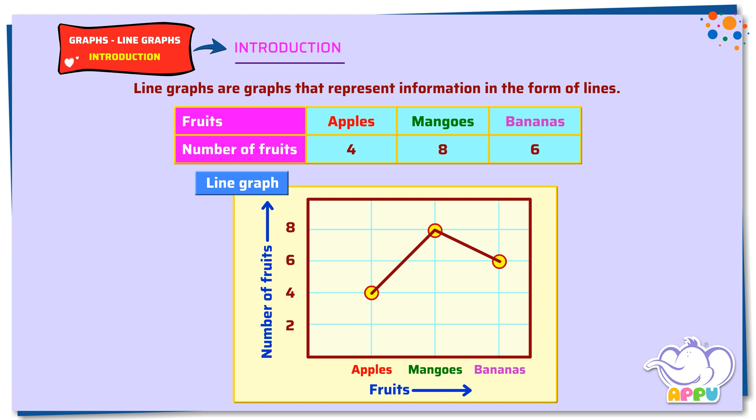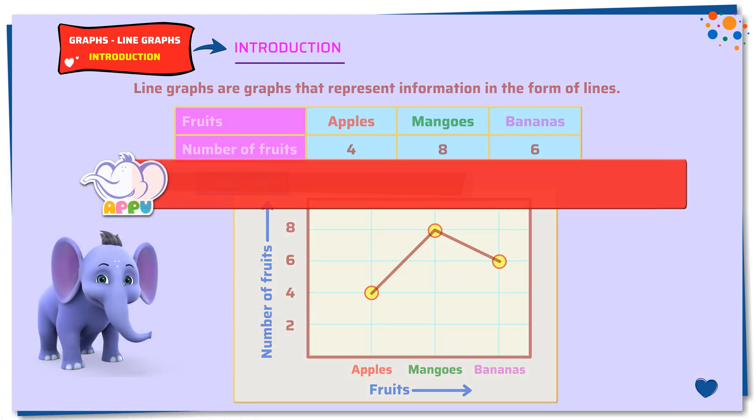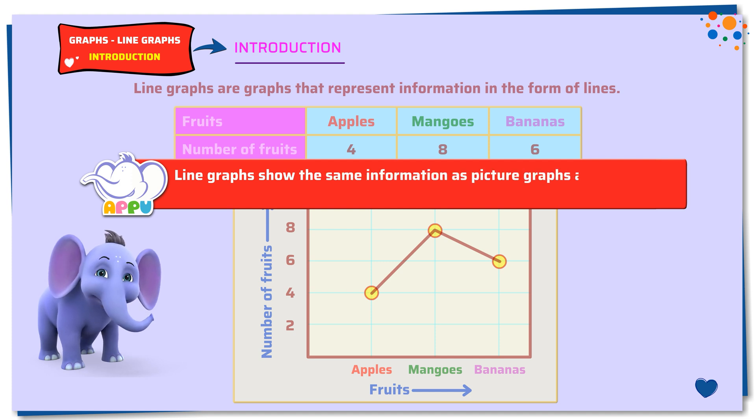These are different ways of representations. Line graphs show the same information as picture graphs and bar graphs, but are simpler.